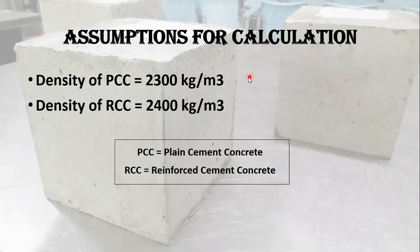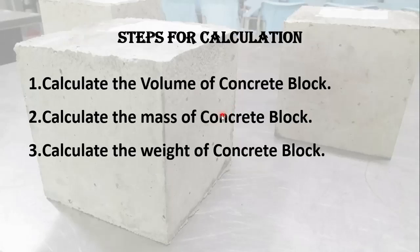These are the assumptions we will consider for our calculation. The density of plain cement concrete (PCC) is 2300 kg/m³, and the density of reinforced cement concrete (RCC) is 2400 kg/m³. This example is about plain cement concrete.